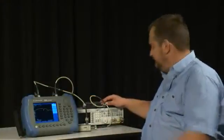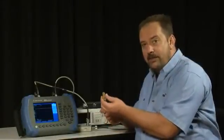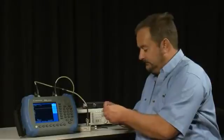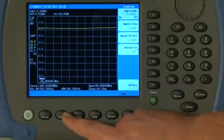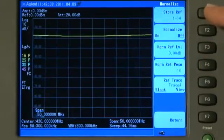So to perform the normalization, we will disconnect the cable from the filter. We will connect a Precision 50 Ohm short circuit. We press Measure, and Normalize. Store reference 1 to 4, and Normalize on.